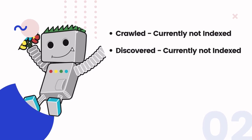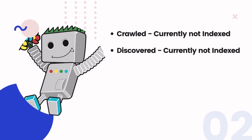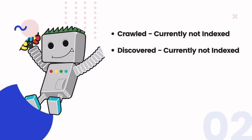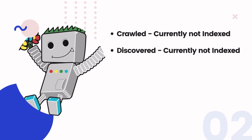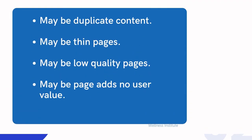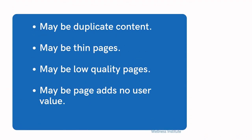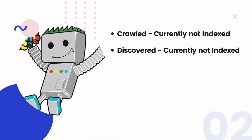In my point of view, both are more or less the same. Discovered currently not indexed means the page is discovered and added to the queue to crawl but has not yet been crawled or indexed. If the page is crawled but not indexed, that means Google knows about the URL and knows what the page is about, but it may not feel it is strong enough to keep in its index — because it might be duplicate content, low quality content, or thin pages.